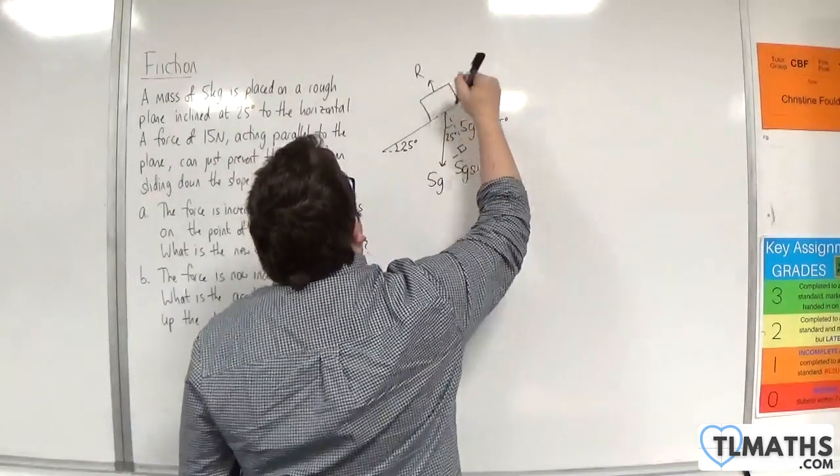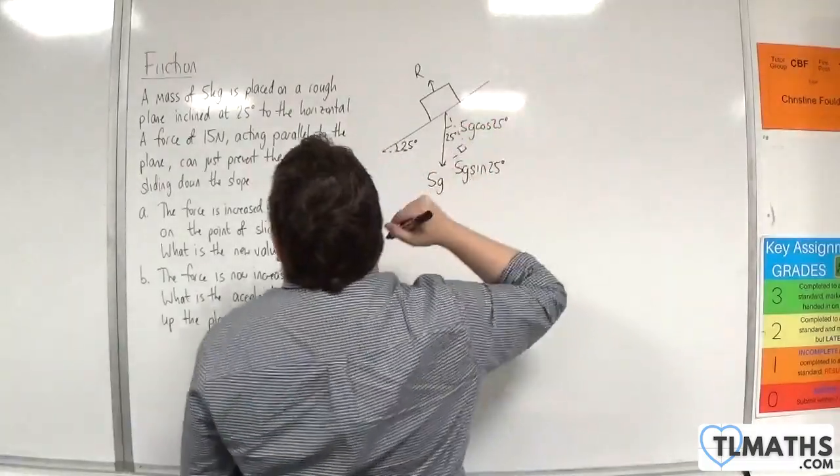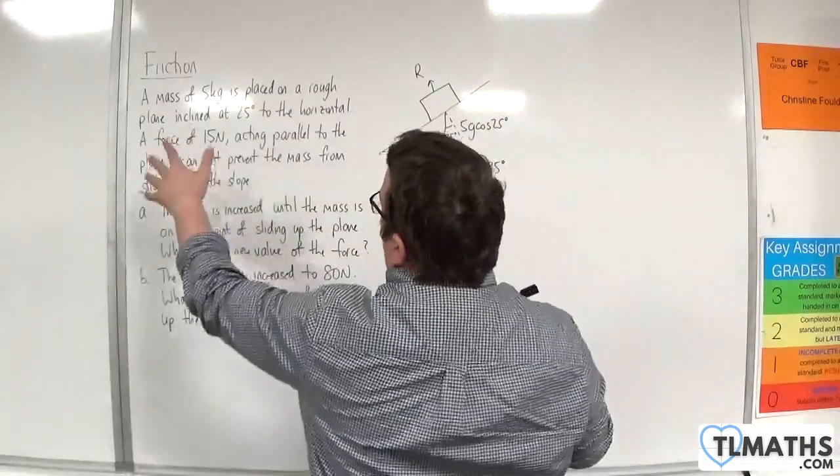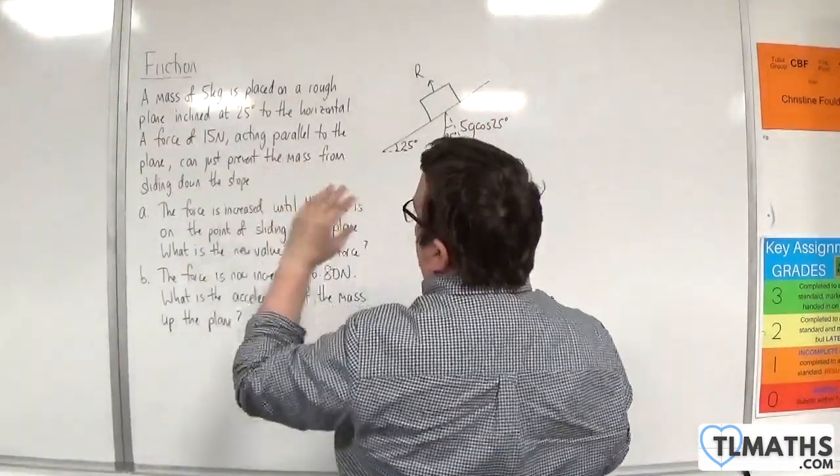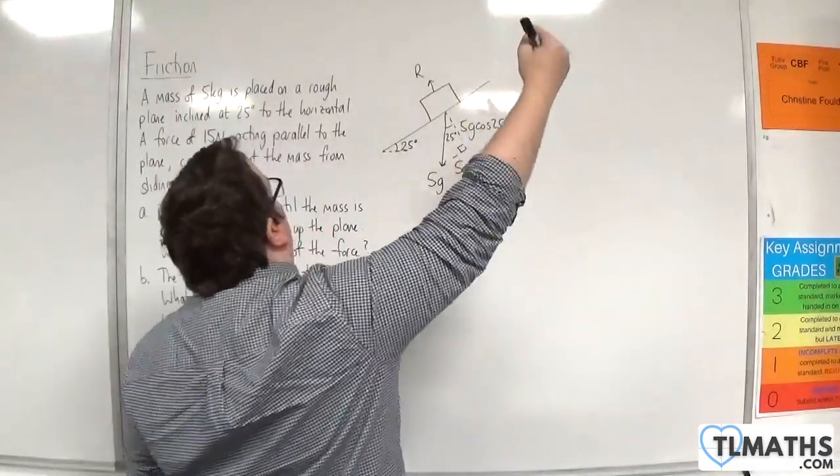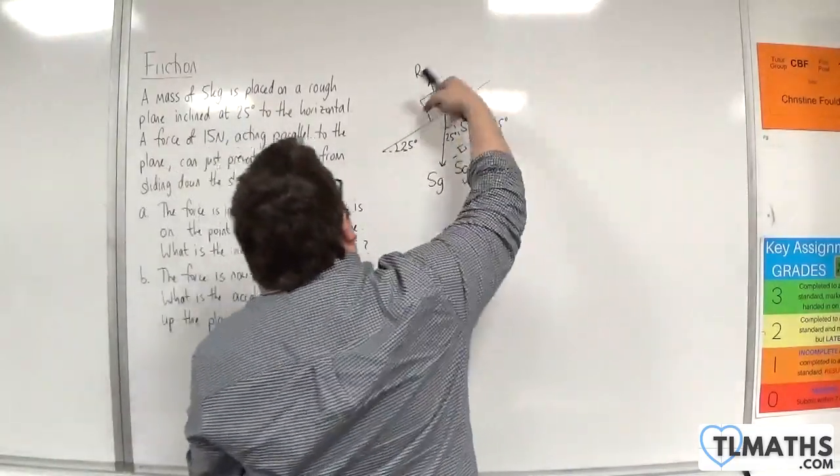Now there's going to be a normal reaction force because it's in contact with the surface. And a force of 15 newtons acting parallel to the plane could just prevent the mass from sliding down the slope. So the block wants to slide down the slope.